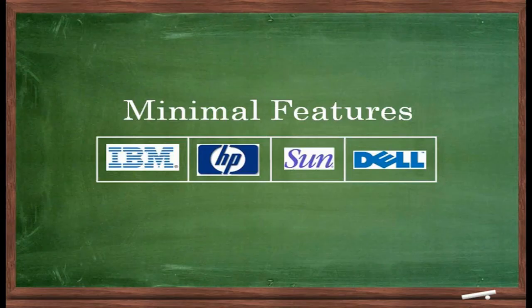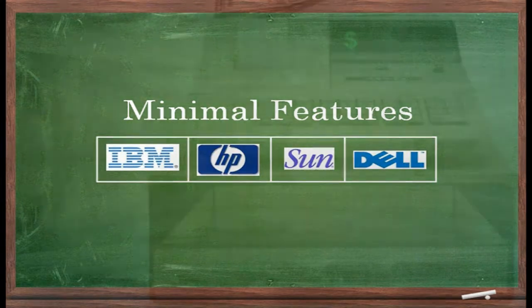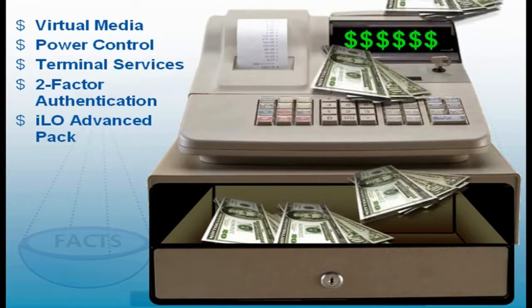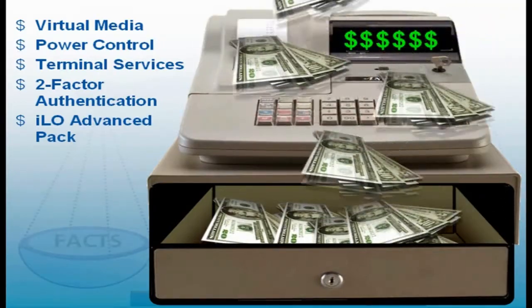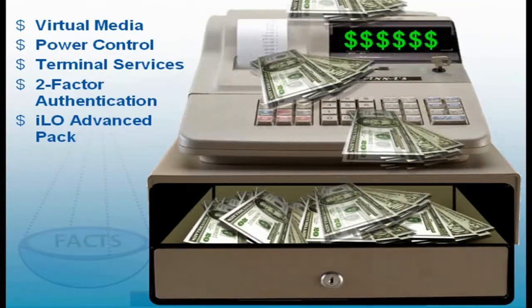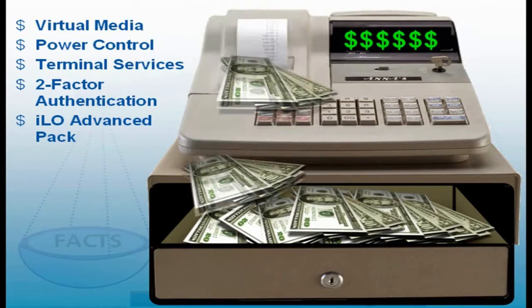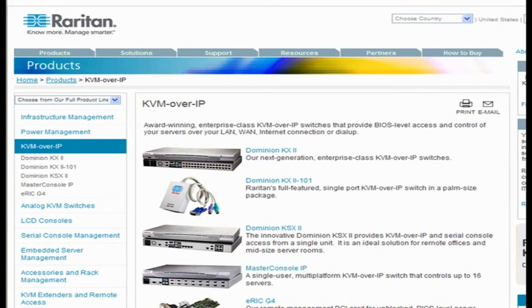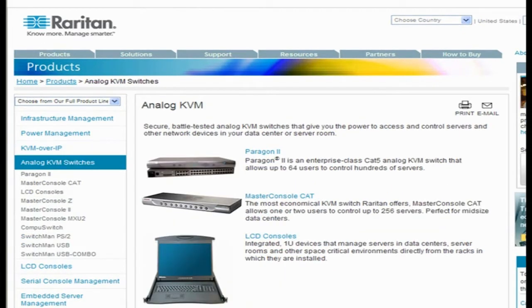Most of those server companies provide just minimal features with the basic embedded service processor. Want things like virtual media or power control? For that, you'll need to buy additional software licenses, sometimes priced per additional feature. That can quickly add up to hundreds of dollars more per server. Also, the cost to manage hundreds of ESPs can be quite expensive. A Raritan KVM access solution averages between $250 to $500 per server with a large number of additional features and capabilities included in that price.